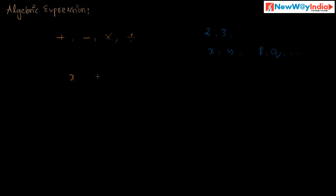Consider a literal that is x, plus another literal y, and 2 is a constant. These are connected by the symbols plus and minus. That is x plus y minus 2. These literals and constants are separated by the symbols plus and minus. This is an algebraic expression.